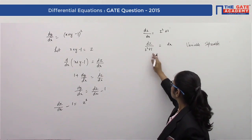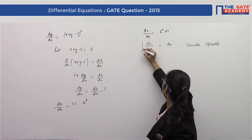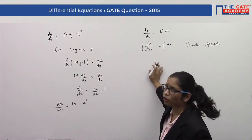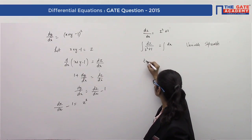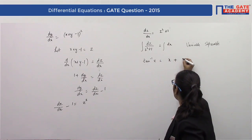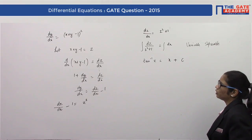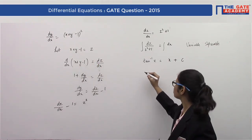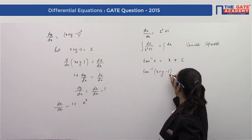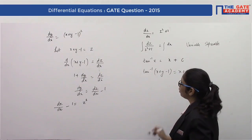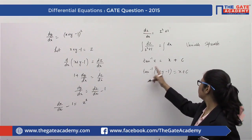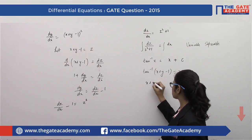Integrating both sides, the left side uses the standard formula ∫dz/(1 + z²) = tan⁻¹(z), giving tan⁻¹(z) = x + c. Now substituting back z = x + y − 1, we get tan⁻¹(x + y − 1) = x + c.